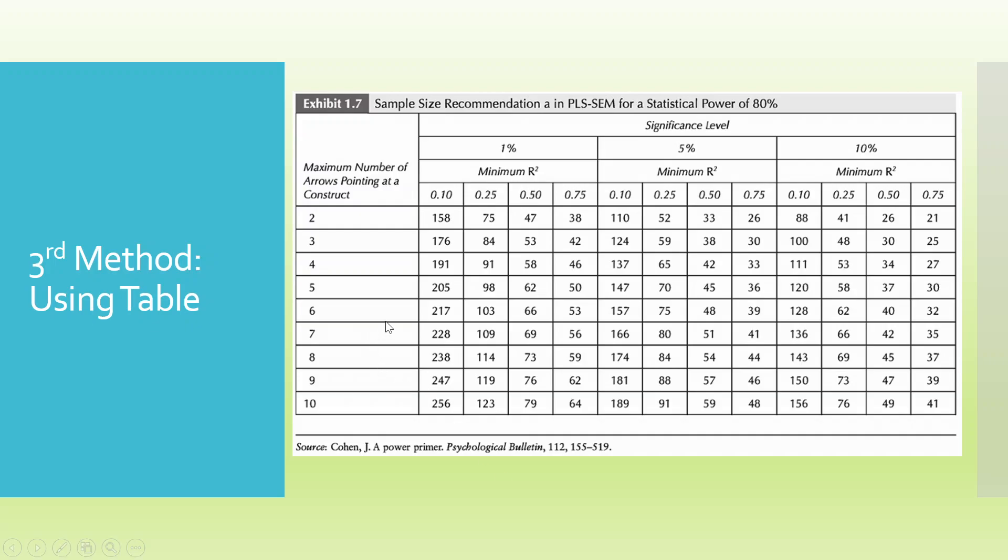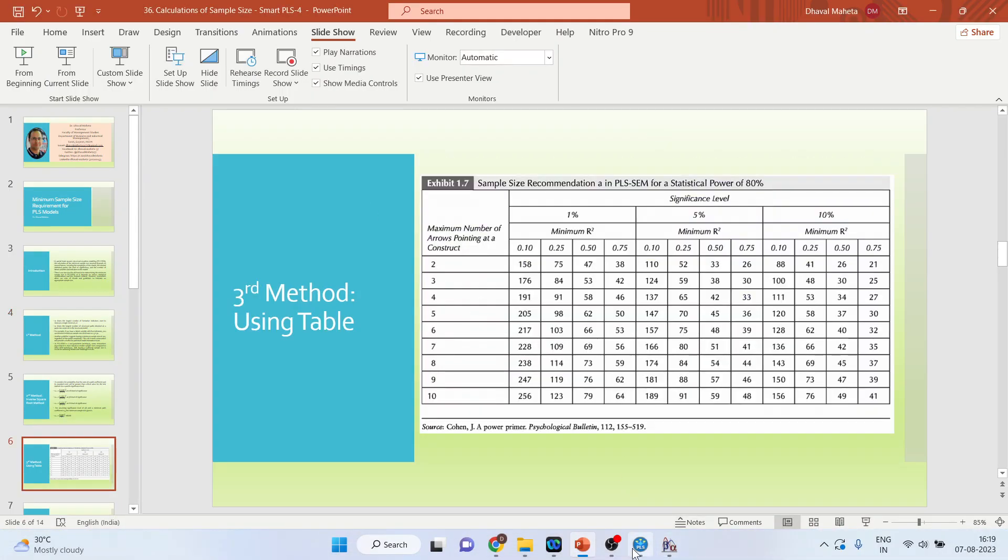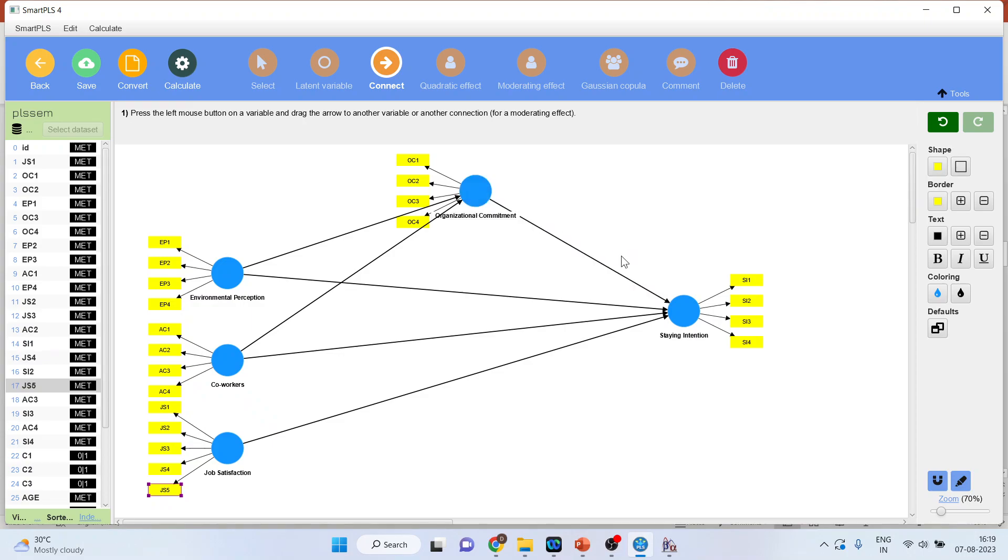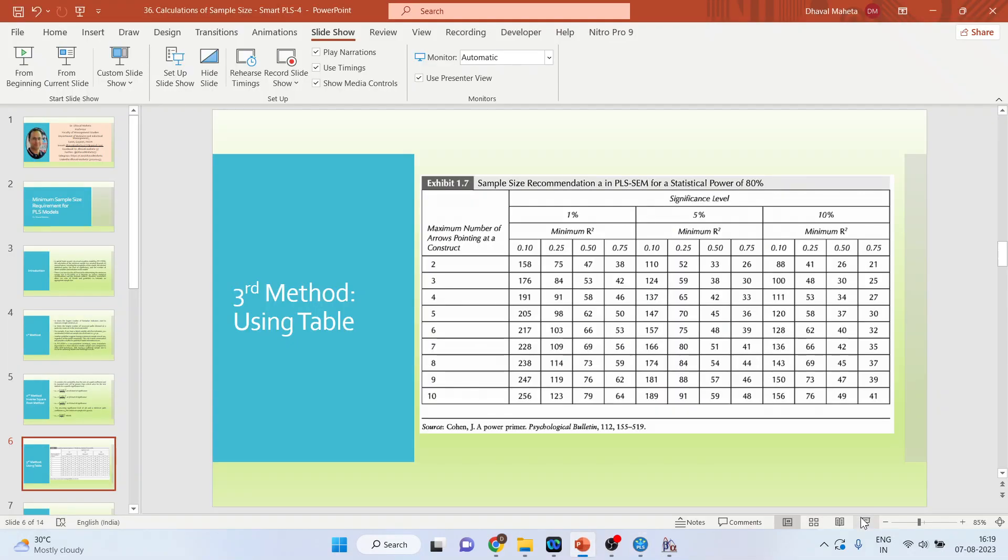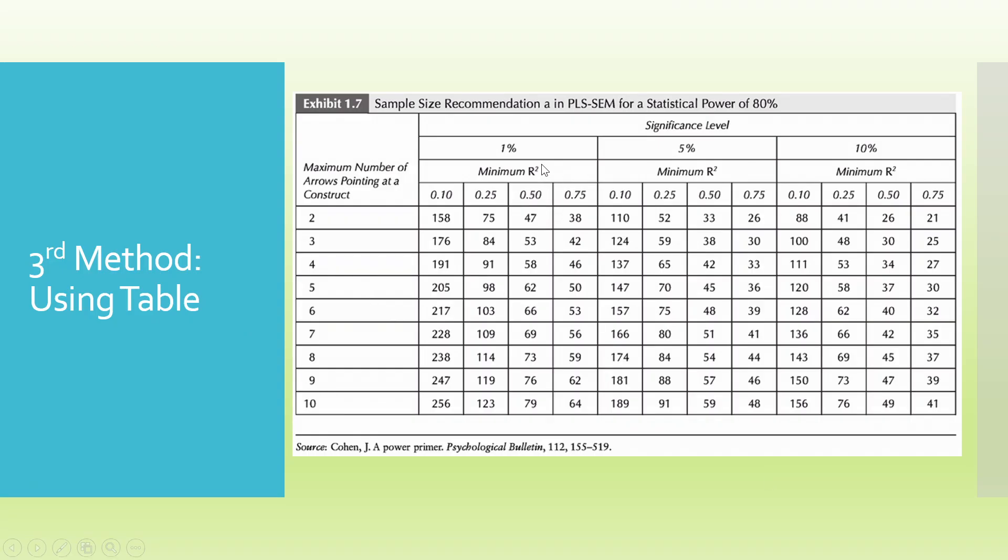Third method: maximum number of arrows pointing at a construct. So again, we will go back in the model. Maximum number of arrows pointing at a construct. Four arrows are there. Our target, that is minimum R-square required. Do we require 0.50, 0.70? How much do we require? So let's say in social science, we require 0.50. And we want to work on 5% level of significance here. And 0.50. Four are there. So the minimum sample size is 42.